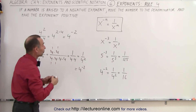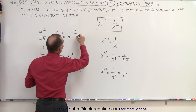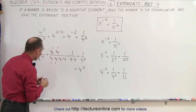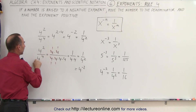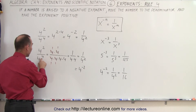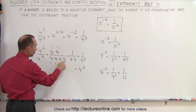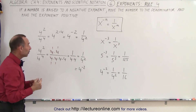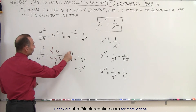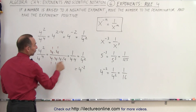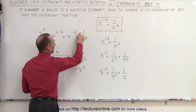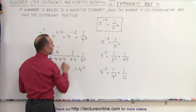We realize that 4 to the minus 2 should be writable, according to that rule, as 1 over 4 squared. Let's verify: 4 to the second power divided by 4 to the fourth power — 4 squared is 4 times 4, and 4 to the fourth is 4 times 4 times 4 times 4. This 4 and this 4 cancel, and this 4 and this 4 cancel, leaving 1 over 4 times 4, which is 1 over 4 squared.